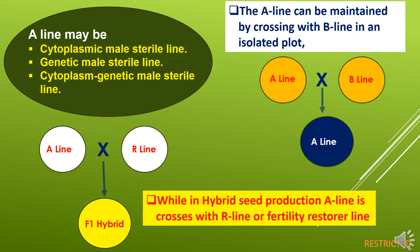First we will study about A line. A line is the male sterile line and it has sterility of three types: cytoplasmic male sterile, genetic male sterile, and cytoplasmic-genetic male sterile. A line is used in two ways. First, A line can be maintained by crossing with B line in an isolated plot to get the female line in the desired quantity. For multiplication of A line, it is crossed with B line which results in a male sterile A line. The difference between A and B line is only male sterility — all other characteristics are the same.